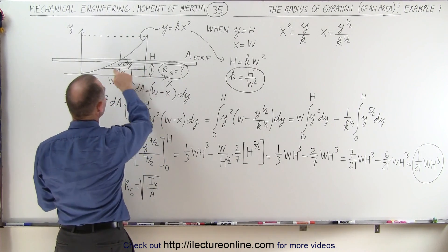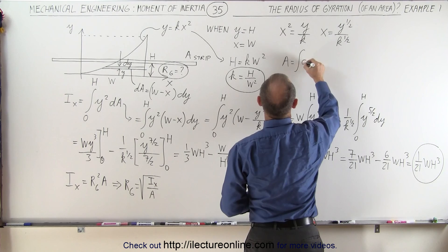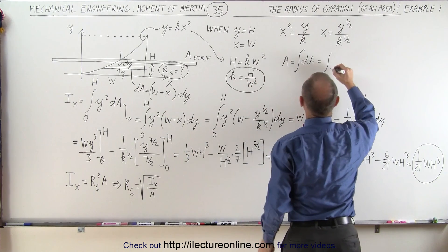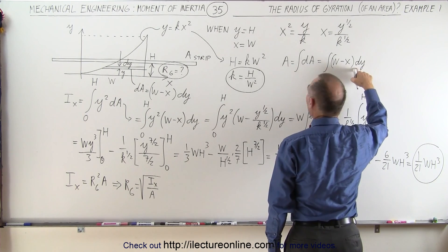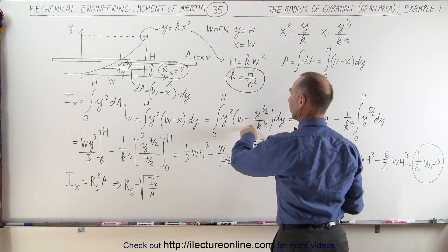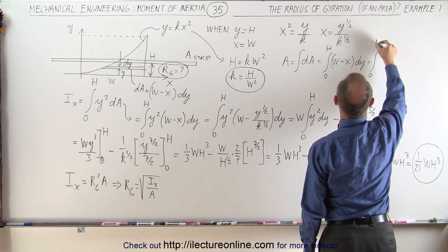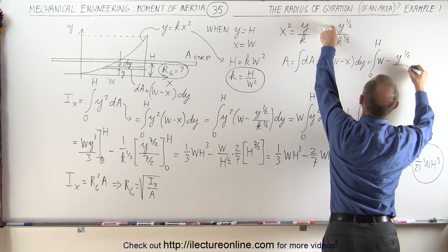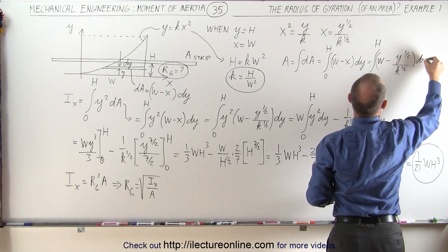To find the area, we need another integral. The area equals the integral of dA, which is the integral of (w minus x) dy from 0 to h. Replacing x with y^(1/2) over k^(1/2), this becomes the integral from 0 to h of (w minus y^(1/2) over k^(1/2)) dy.